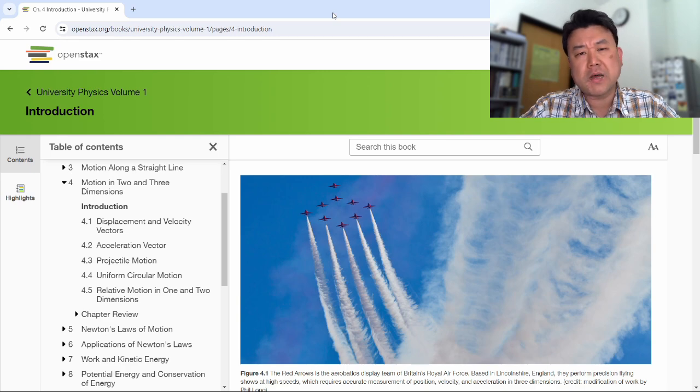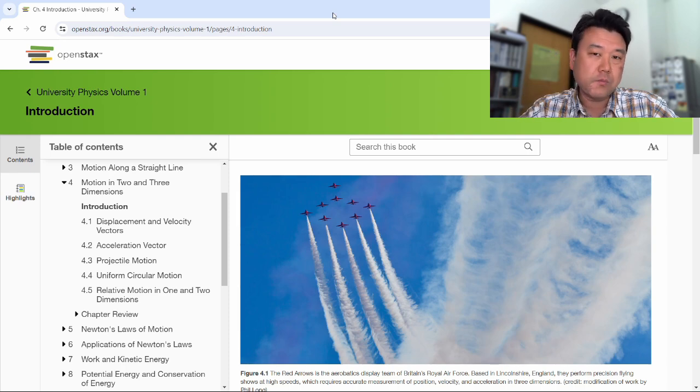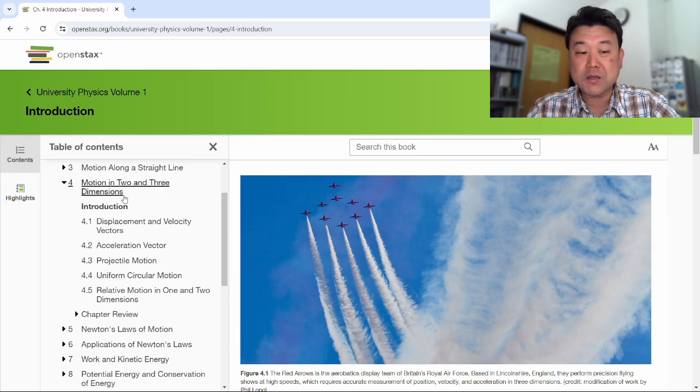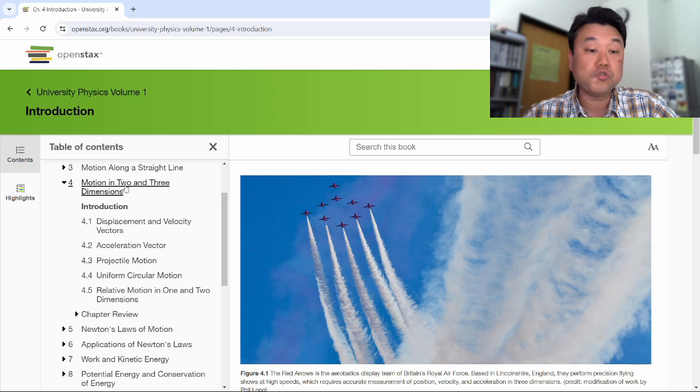In the context of this class, most of the problems we work with will be in two dimensions. Later on, when we do rigid body rotation, especially with angular momentum, we'll have to bring in third dimension. But most of the times, even when the motion is actually three dimensional, you can usually pick a plane where all the interesting things happen and describe it adequately two dimensionally. So even though the chapter says motion in two and three dimensions, we'll mostly concern ourselves with the motion in two dimensions.